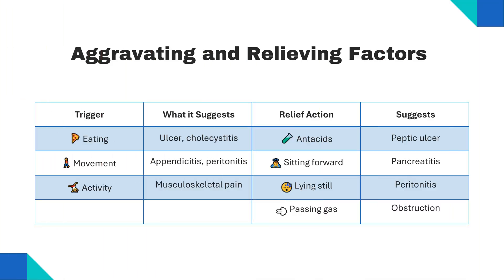Certain recognisable patterns in pain behaviour help in diagnosis and management. Pain occurring after eating may suggest ulcers or cholecystitis, while pain relieved by antacids typically indicates peptic ulcers. Pain that worsens with movement points to conditions like appendicitis or peritonitis. Relief by sitting forward often occurs in pancreatitis, as this position reduces pressure on inflamed tissues. Passing gas can relieve pain caused by intestinal obstruction by reducing bowel distension.